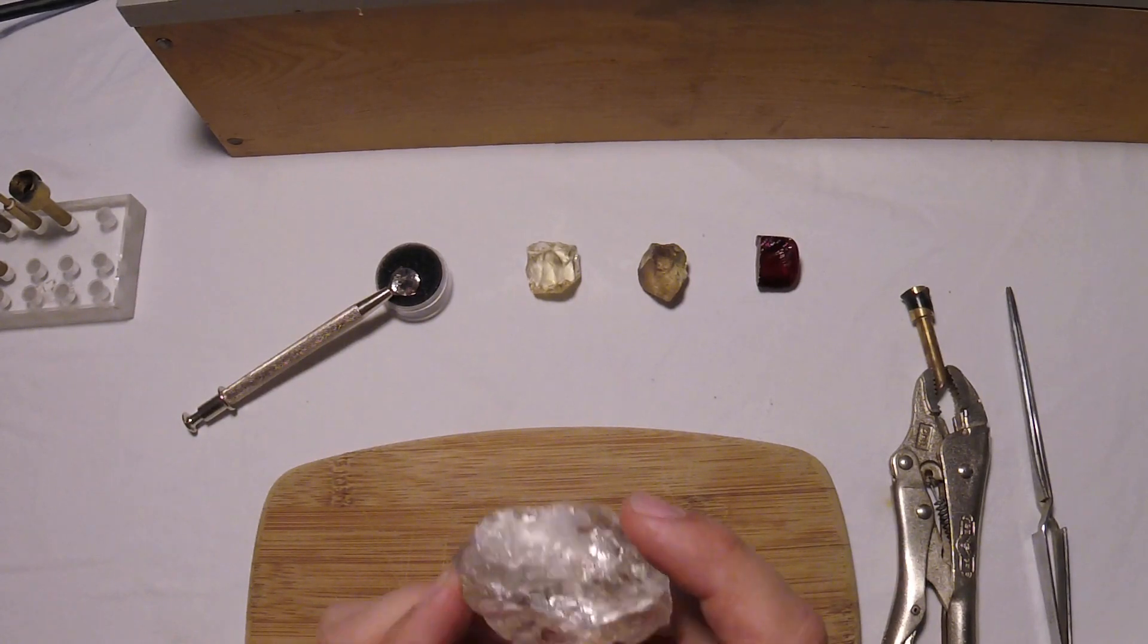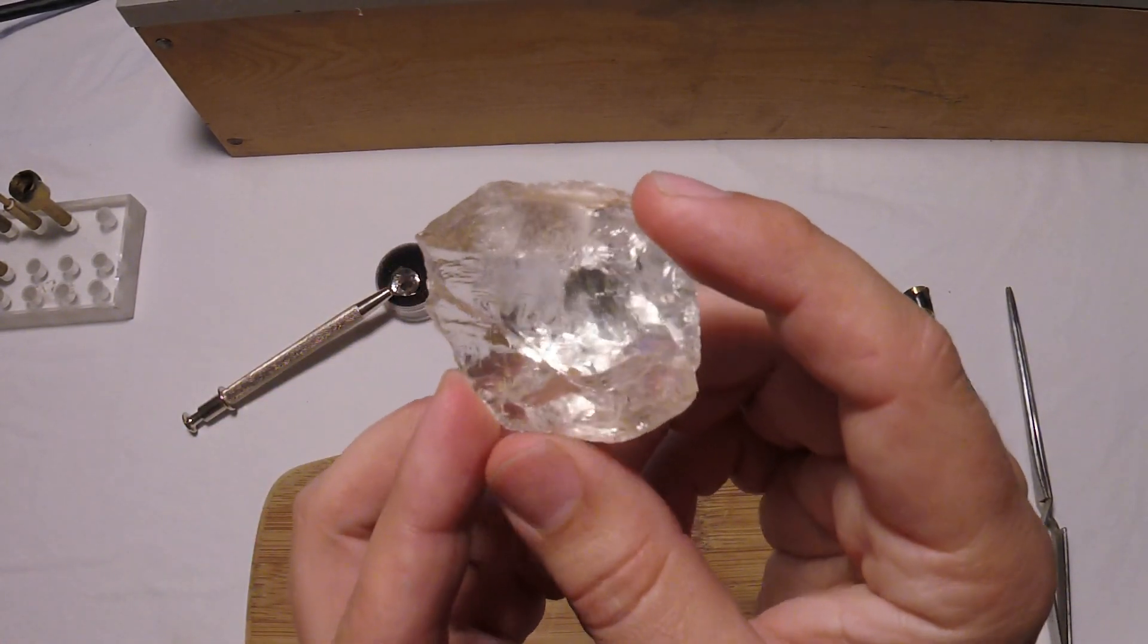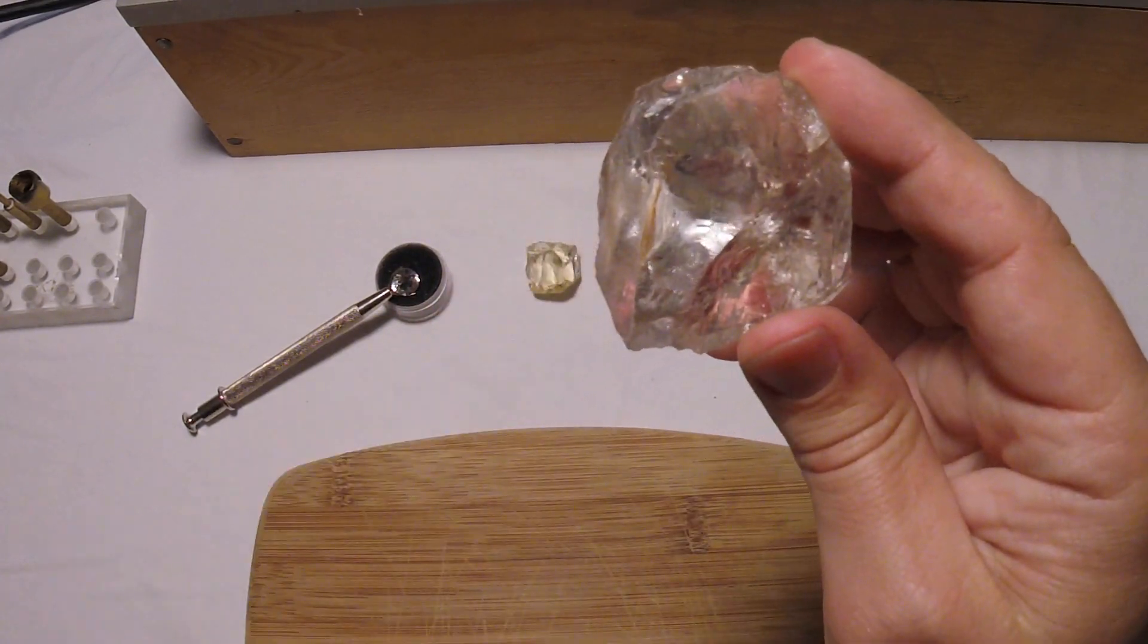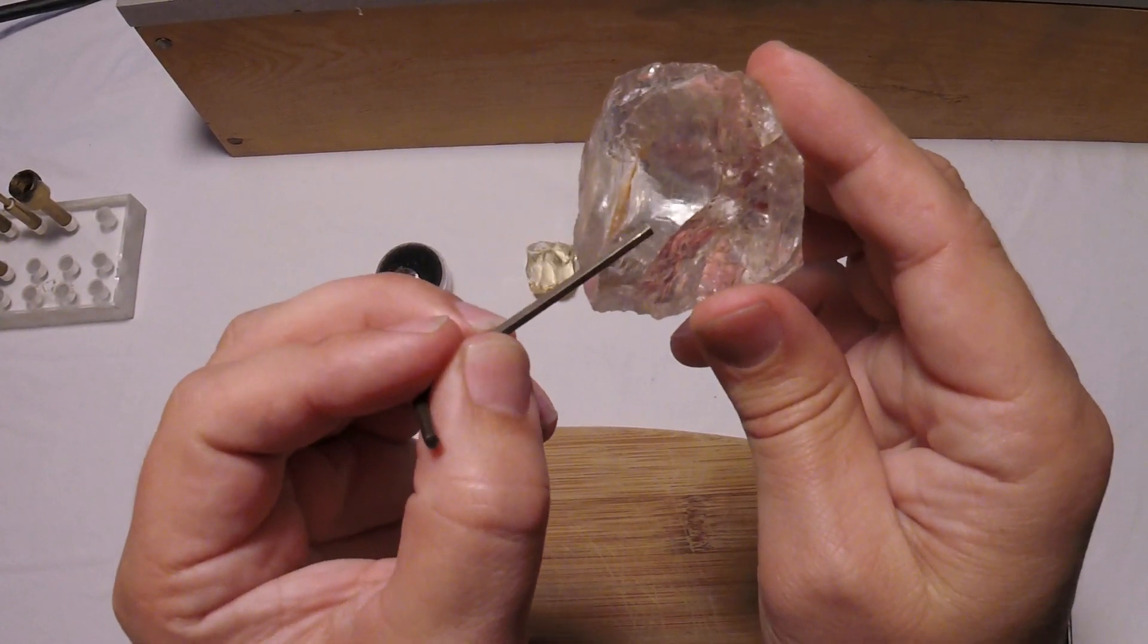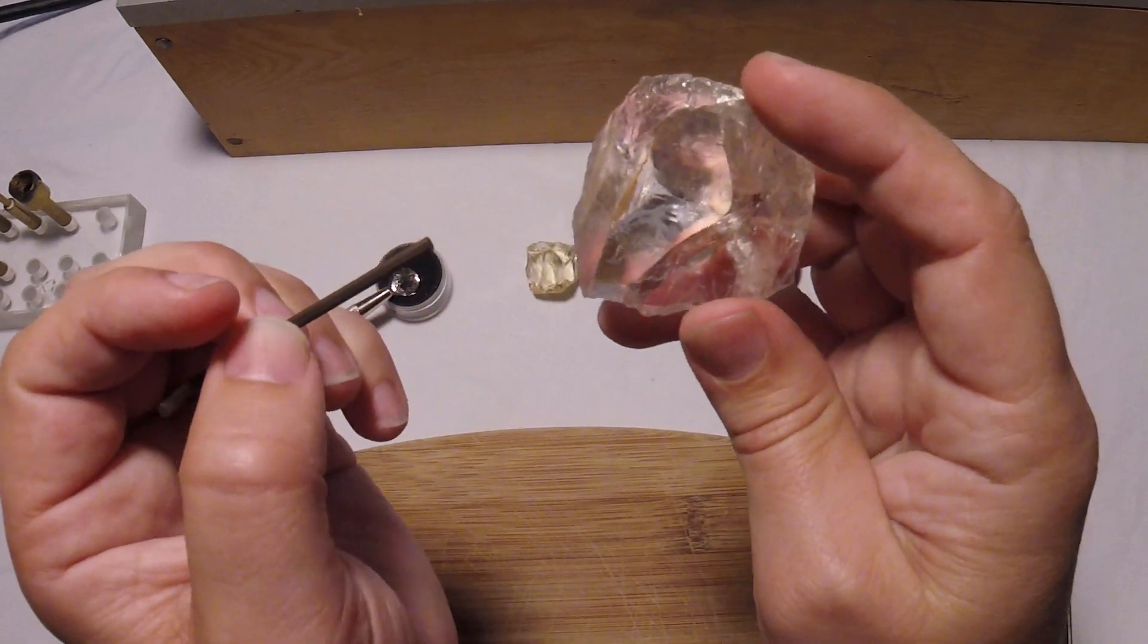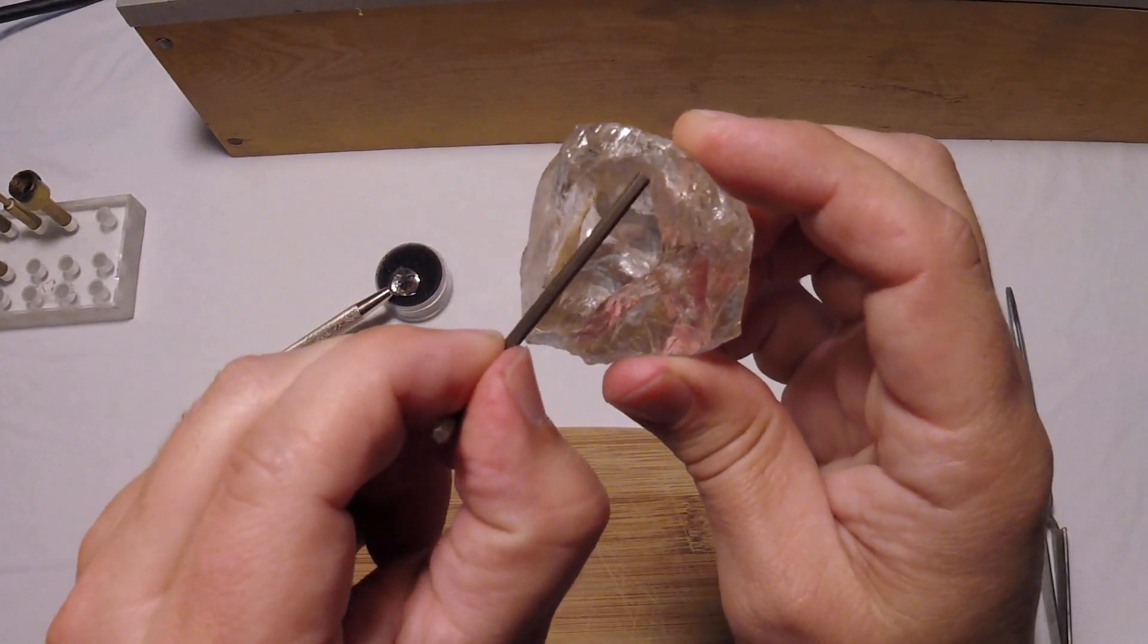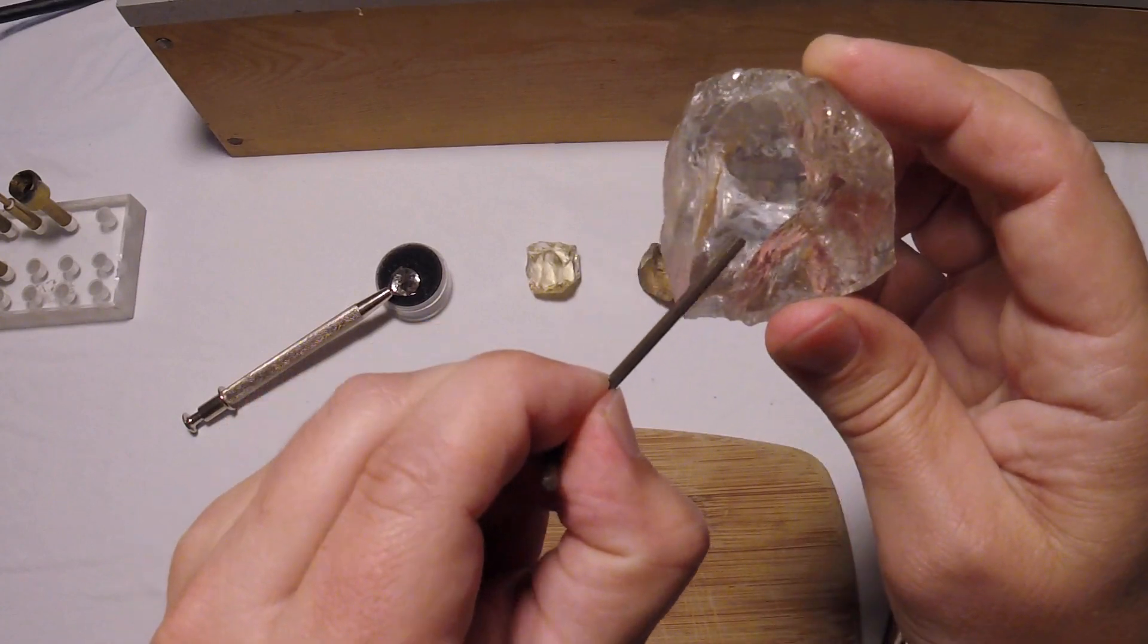When choosing your first stone I would definitely recommend taking a piece of quartz like this. This is a particularly clear piece. You can see there's some fractures in the middle but all this area here is all very clear, you can't see any veils or cracks or flaws in it by your naked eyes. If I was going to use this piece, what I would do is cut around these flaws and just use this piece in the middle.